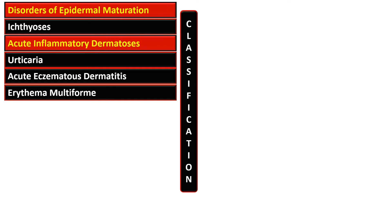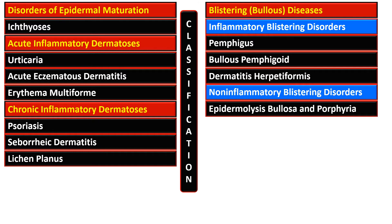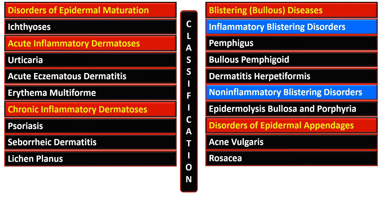Acute inflammatory dermatosis includes urticaria, acute eczematous dermatitis, and erythema multiforme. Chronic inflammatory dermatosis includes psoriasis, seborrheic dermatitis, and lichen planus. The blistering disorders or bullous diseases can be divided into inflammatory and non-inflammatory lesions. The inflammatory ones are pemphigus, bullous pemphigoid, and dermatitis herpetiformis, while epidermolysis bullosa and porphyria are non-inflammatory blistering disorders.